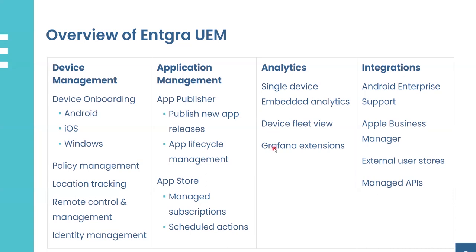Graphon extensions integrate powerful visualization for more insights. For integrations, we have Android Enterprise support and Apple Business Manager support. You can also integrate external user directories if needed, and integrate third-party APIs, expanding the functionality of the UEM platform to suit your specific use cases.